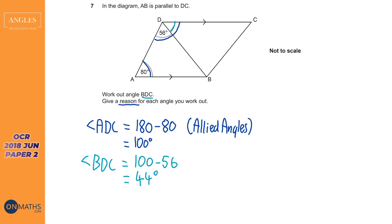As a bonus, you could have extended the line and used alternate angles — Z angles — to get 80, then done 180 take away 56 take away 80, stating alternate angles and angles on a straight line as two separate reasons. But the method I chose is the easiest because it goes straight there without drawing extra lines, and you only need to write down allied angles. I hope that's been useful — go to the website onmaths.com, and if you enjoyed this video please like and subscribe.